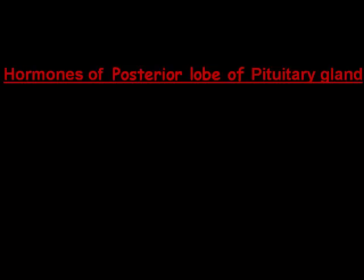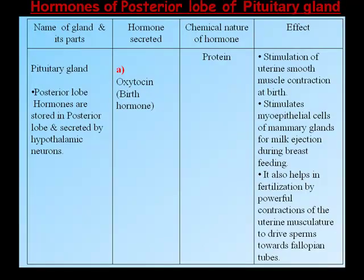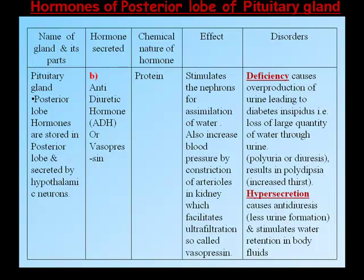Hormones of the posterior lobe of the pituitary gland are stored in the posterior lobe and secreted by hypothalamic neurons. Oxytocin (birth hormone) is a protein; its effects include stimulation of uterine smooth muscle contraction at birth, stimulation of myoepithelial cells of mammary glands for milk ejection during breastfeeding, and helping in fertilization by powerful contractions of the uterine musculature to drive sperms towards the fallopian tubes.